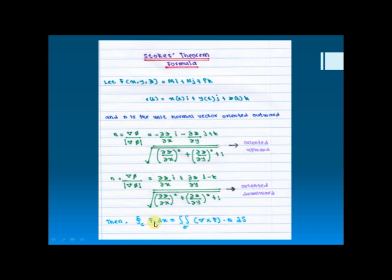Here, we can find the formula of F·dr using this formula for the right-hand side. You can get this using — here is F, and the value of N. You can try to use this formula, like this, which is being used in Stokes' theorem.